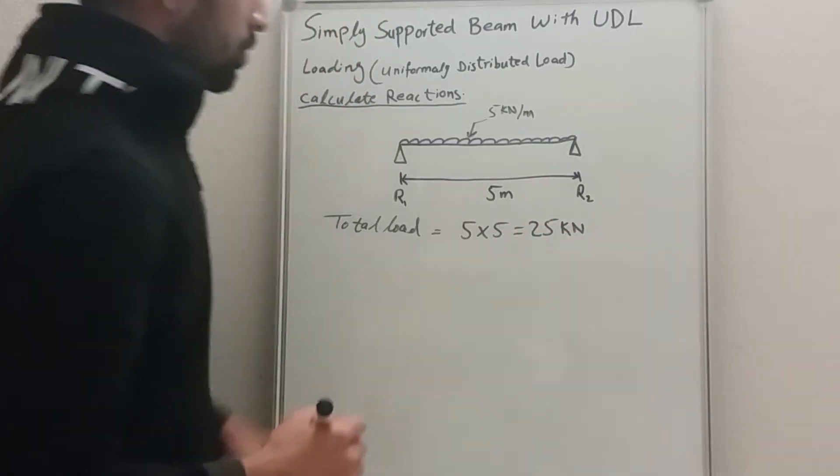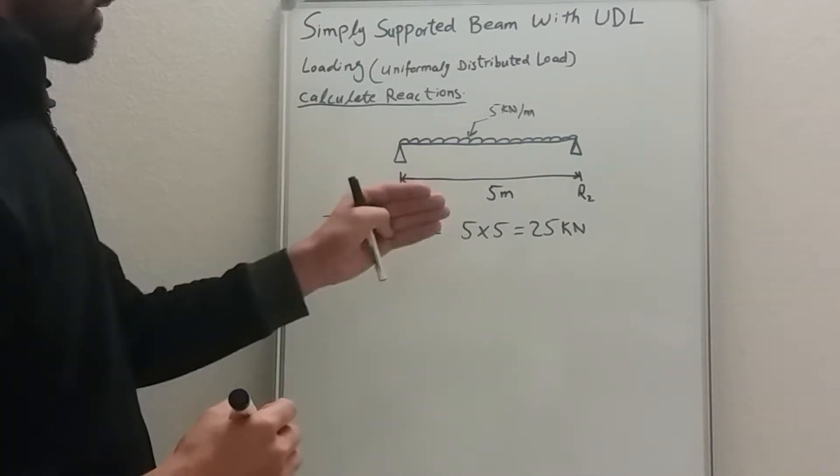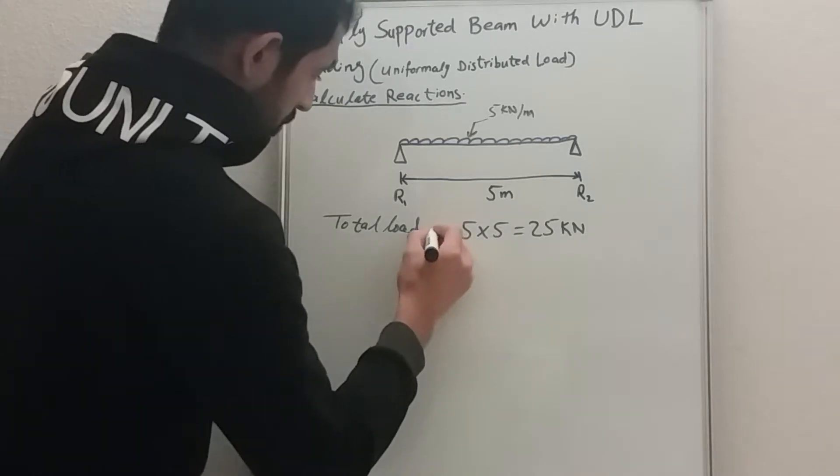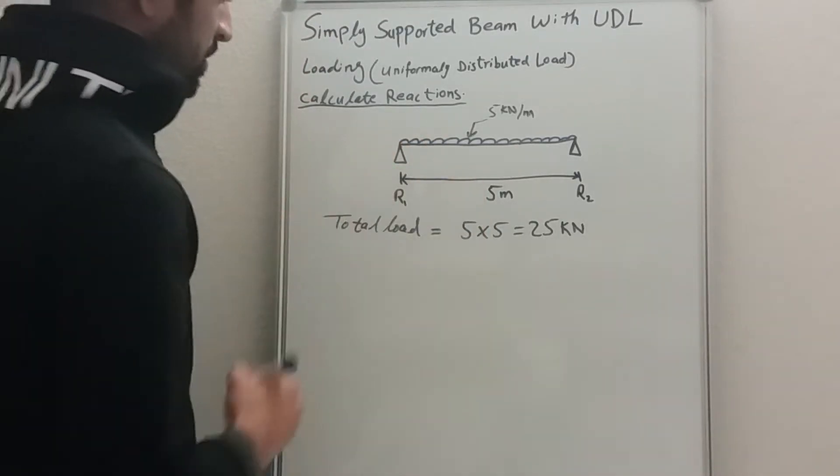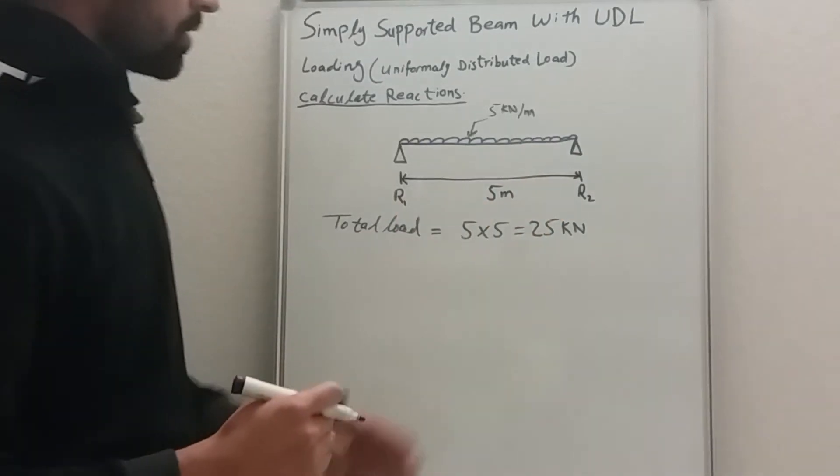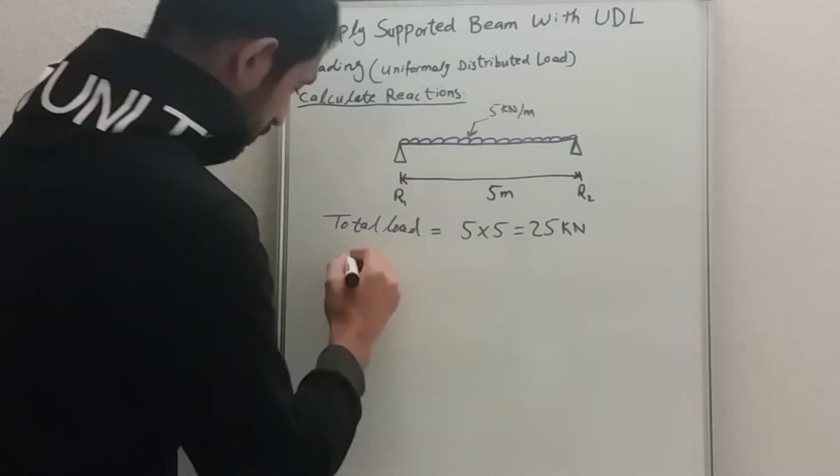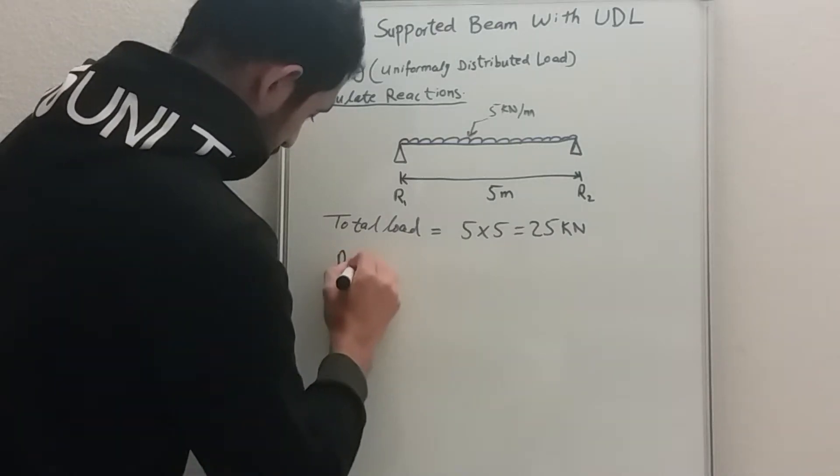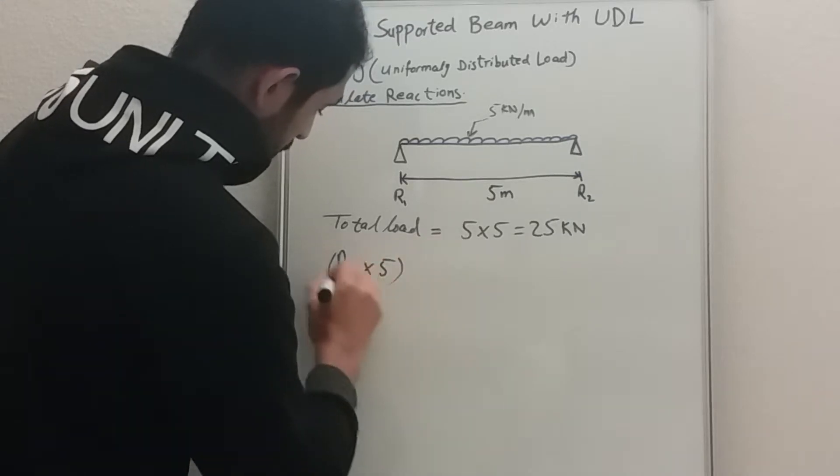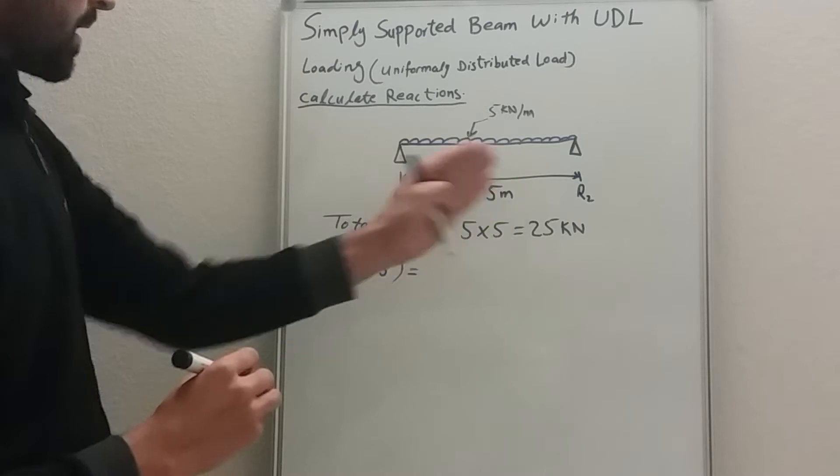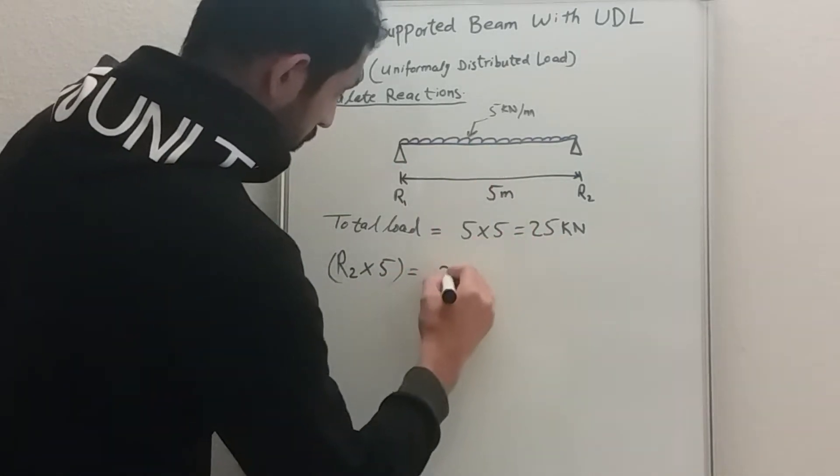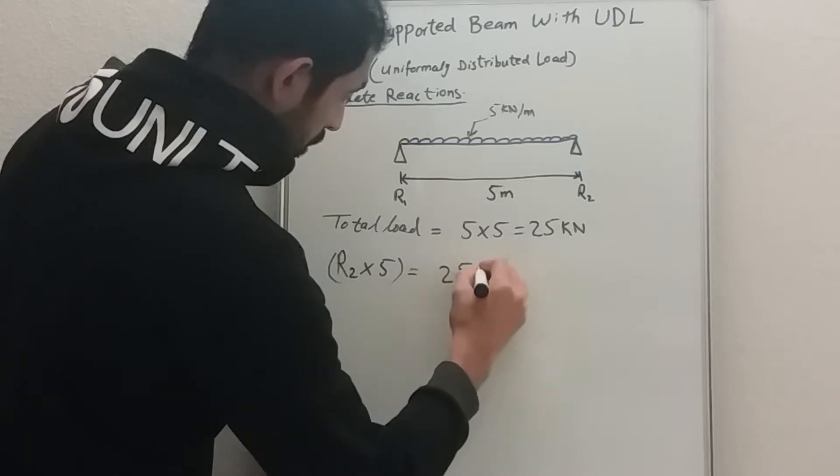So 25 kilonewtons is acting on our simply supported beam. Now how to calculate the reaction? How much load is R1 resisting and how much load is R2 resisting? R2 is going to be 5 because this is 5, the length of beam, the span of the beam. And the load we have is 25 kilonewtons.